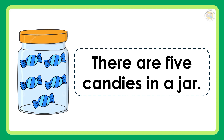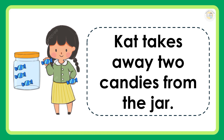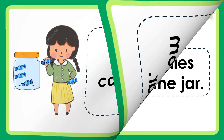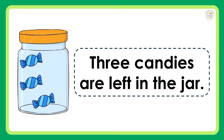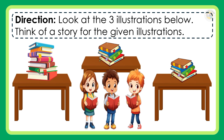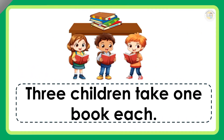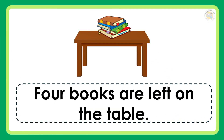There are 5 candies in a jar. There are 7 books on the table. 3 children take 1 book each. 4 books are left on the table.